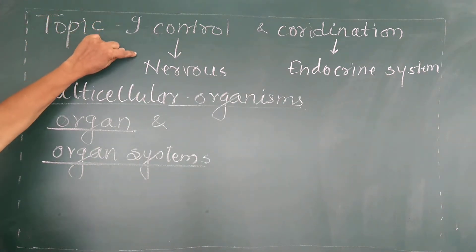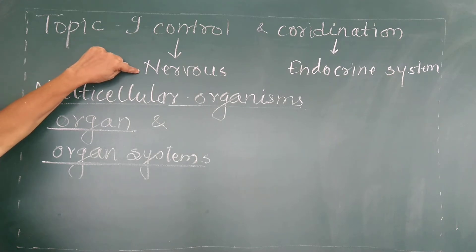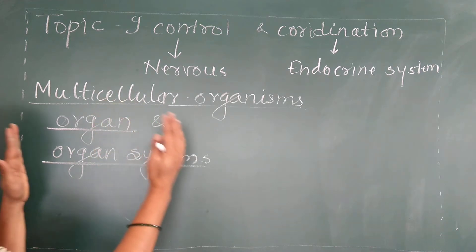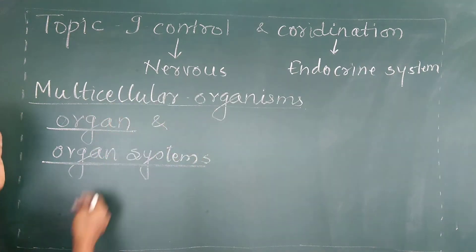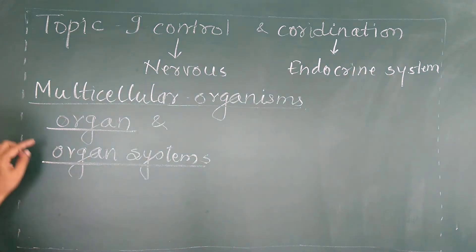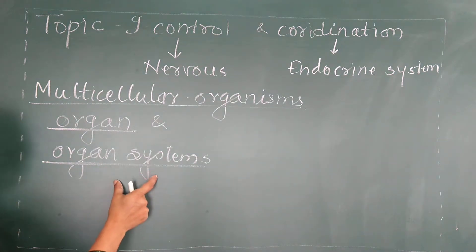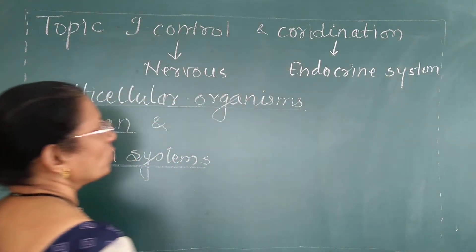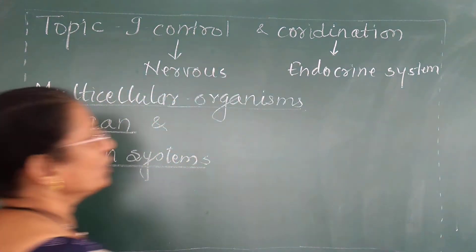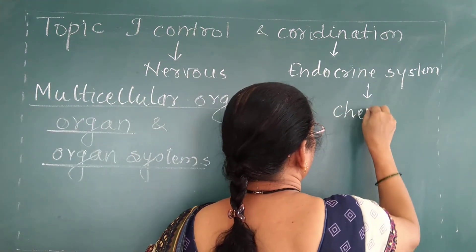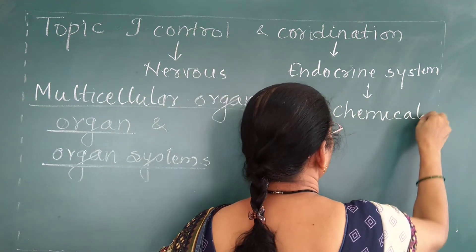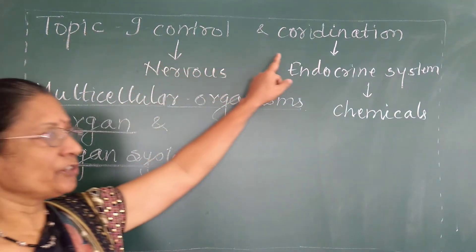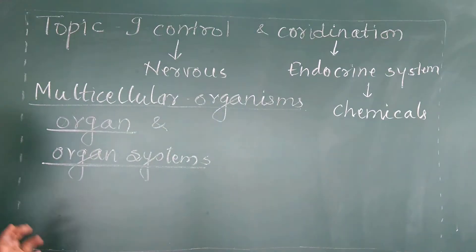Control is because of the nervous system. The nervous system is for the control of these systems. Single organs can be controlled on their own, and organ systems work in coordination with each other. For this coordination, the endocrine system is there, which works through different chemicals called hormones. These two systems, control and coordination, work in harmony with each other.